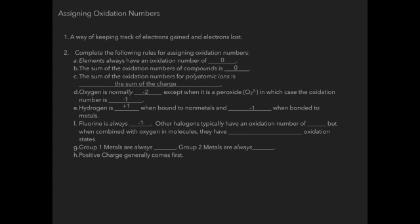Fluorine is always negative one. And while halogens tend to have an oxidation number of negative one, they can actually have variable oxidation states. Group one metals always have a plus one, and group two metals always have a plus two oxidation number. And positive charge generally comes before the negative charge.